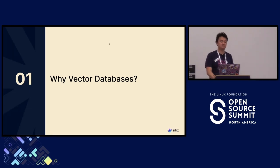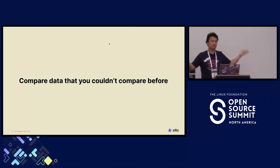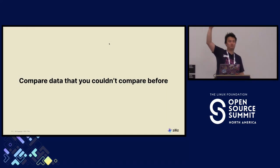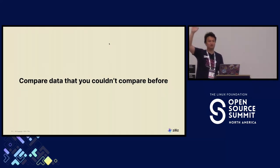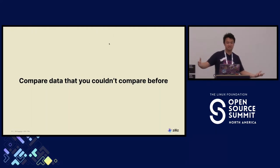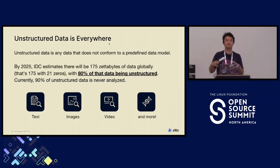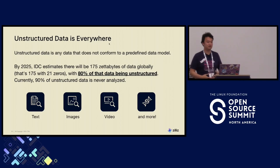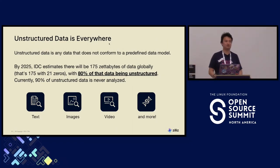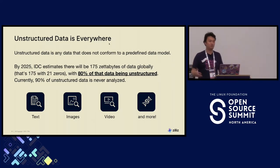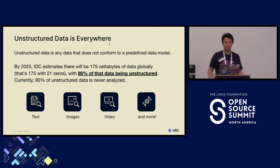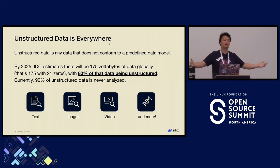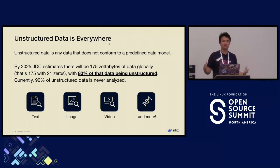You use vector databases if you want to compare data that you couldn't compare before. Everyone's familiar with tabular data, SQL, relational databases, and keyword search. Vector databases power the next level — semantic search. The real reason they're popular is because unstructured data is everywhere. Pictures, videos, audio, reviews, DNA — these are all unstructured data. Having a way to quantify and compare unstructured data is the value add of using a vector database.